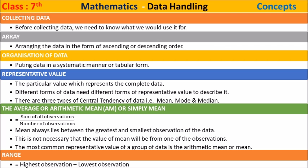A representative value or central tendency of grouped data is a particular value which represents the complete data. Different forms of data need different forms of representative or central value to describe it. There are three types of central tendency of data: mean, mode, and median.